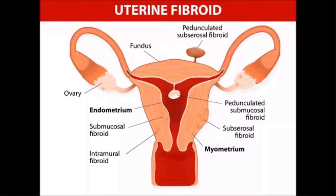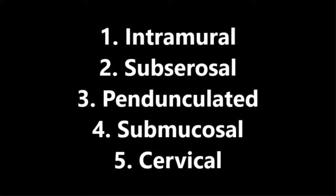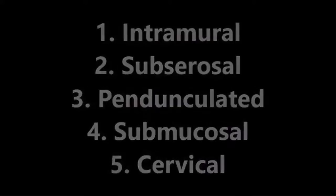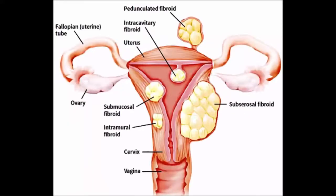In this video, I'm looking at the different types of fibroids. Fibroids are given different names depending on where in the uterus they grow. The five types are intramural, subserosal, pedunculated, submucosal, and cervical. This is what the uterus would look like when there are no fibroids present, and this is an image of a uterus with several different types of fibroids present.